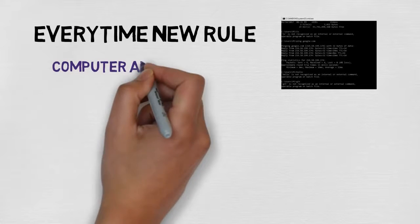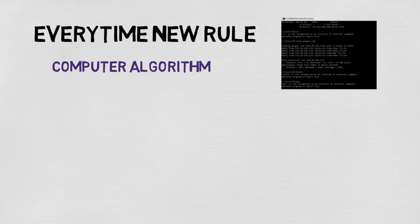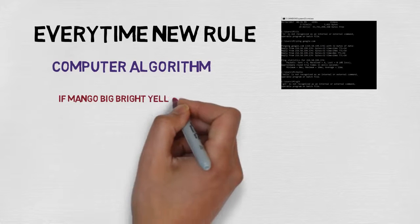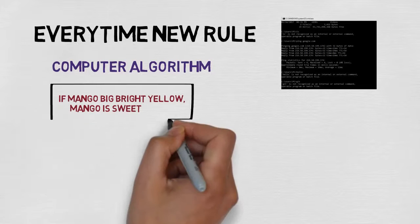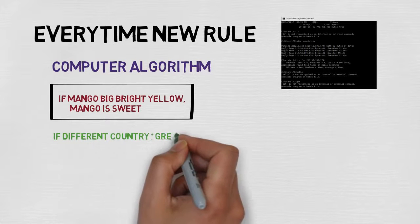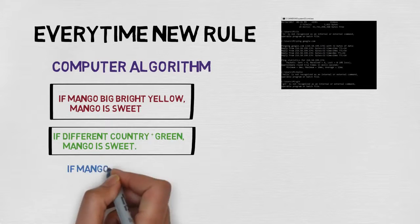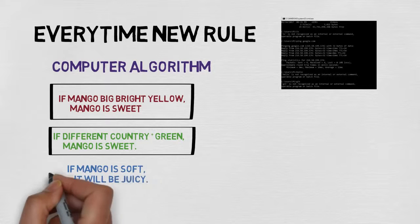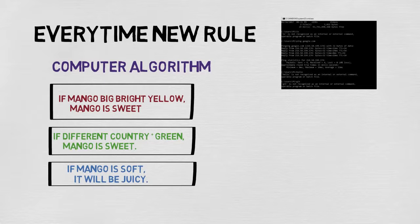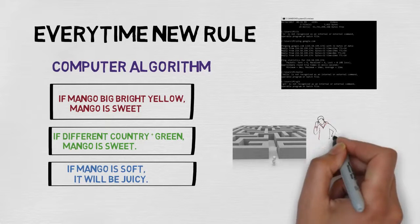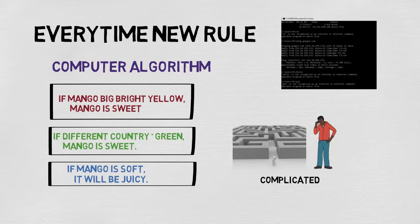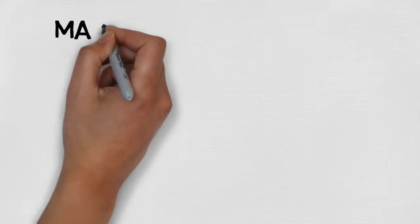If we want to implement all those rules as a computer algorithm, we can write many decision-making statements: if the mango is big and bright yellow, it is sweet; if it is from a different country and green, it is sweet; if it is soft, it will be juicy. This is a never-ending process of creating and updating rules, with no guarantee you can cover all possible cases. This approach is too complicated, and one cannot afford to write all those rules one by one. So instead of creating rules manually, can a machine create them automatically? That's where machine learning comes into the picture.